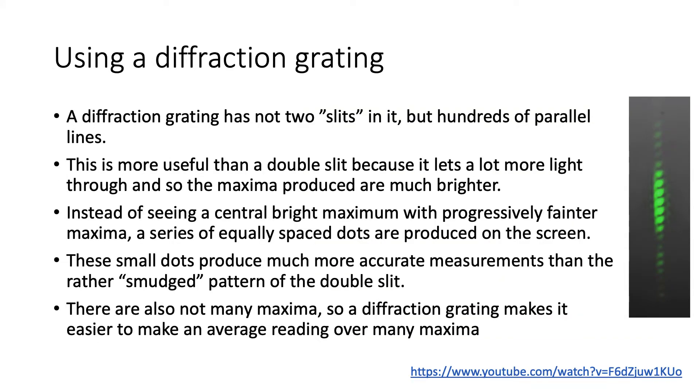The problem with a double slit is that it doesn't let a great deal of light through. A diffraction grating hasn't just two slits, but hundreds and hundreds of parallel lines that are engraved onto glass or plastic. So this lets a lot more light through and produces much brighter maxima.